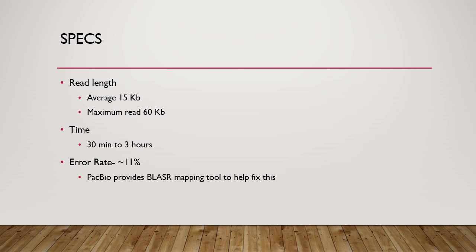Hi, I'm Dr. DNA. I'll be walking you through the basic specs of SMRT sequencing. It is known to process rather long read lengths. The typical size is 20 kilobase pairs, but the maximum read can be up to 60 kilobase pairs, whereas Illumina has an average read length of 250 base pairs. The runtime can take anywhere from 30 minutes to 3 hours since it is occurring in real time, which is significantly shorter than the runtime for Illumina, which can take multiple days.